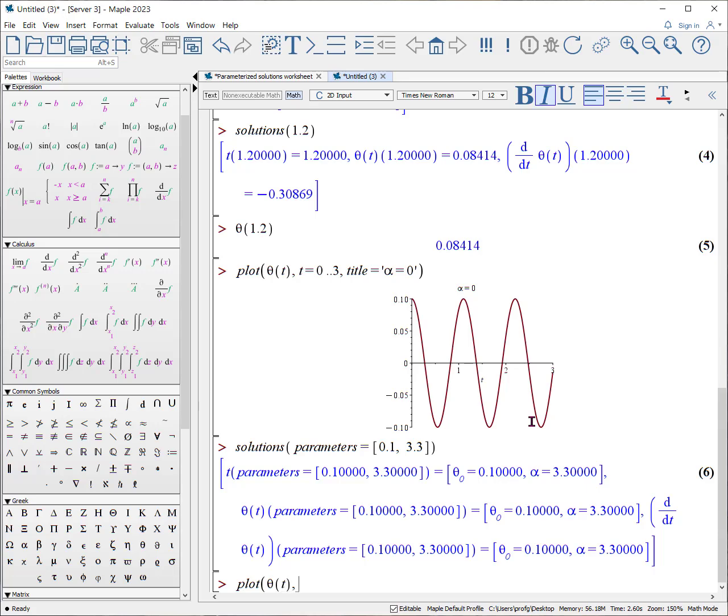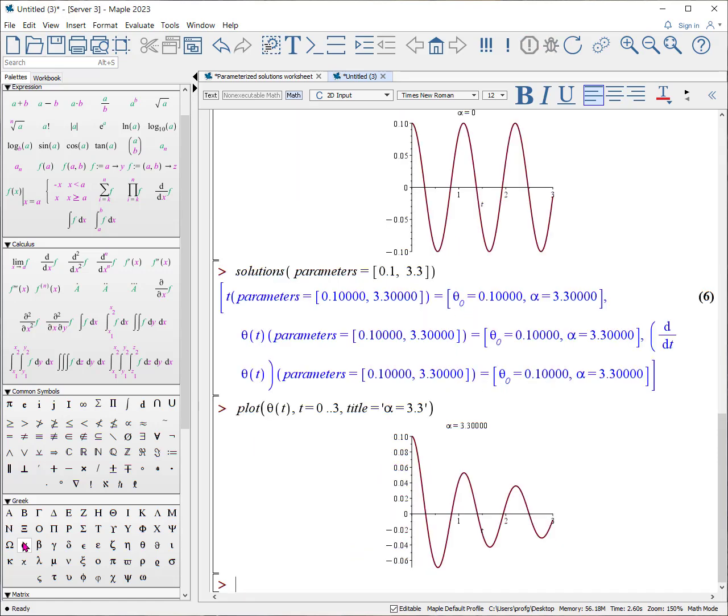Close the list, hit enter, and now we have two values. And now if we plot again θ as a function of time from t equals zero to three, and in this case the title is 'α equals 3.3', okay, so it doesn't act on it. Now you can see that by adding the resistance, the pendulum's angle varies with time and it eventually starts to dampen out.